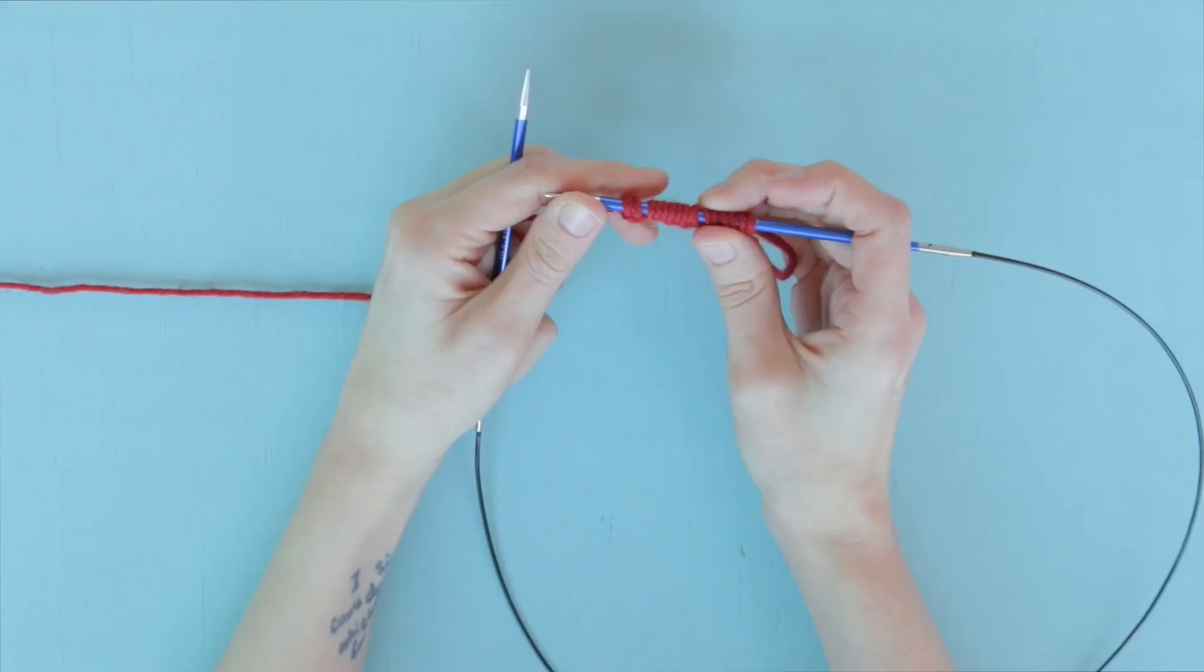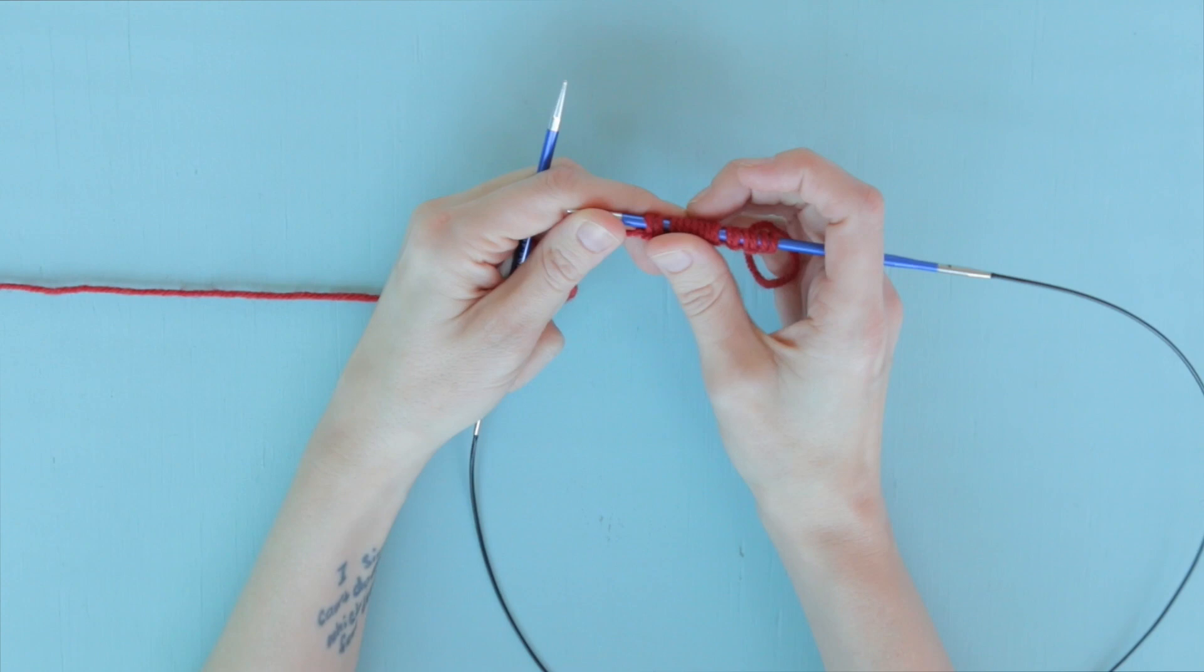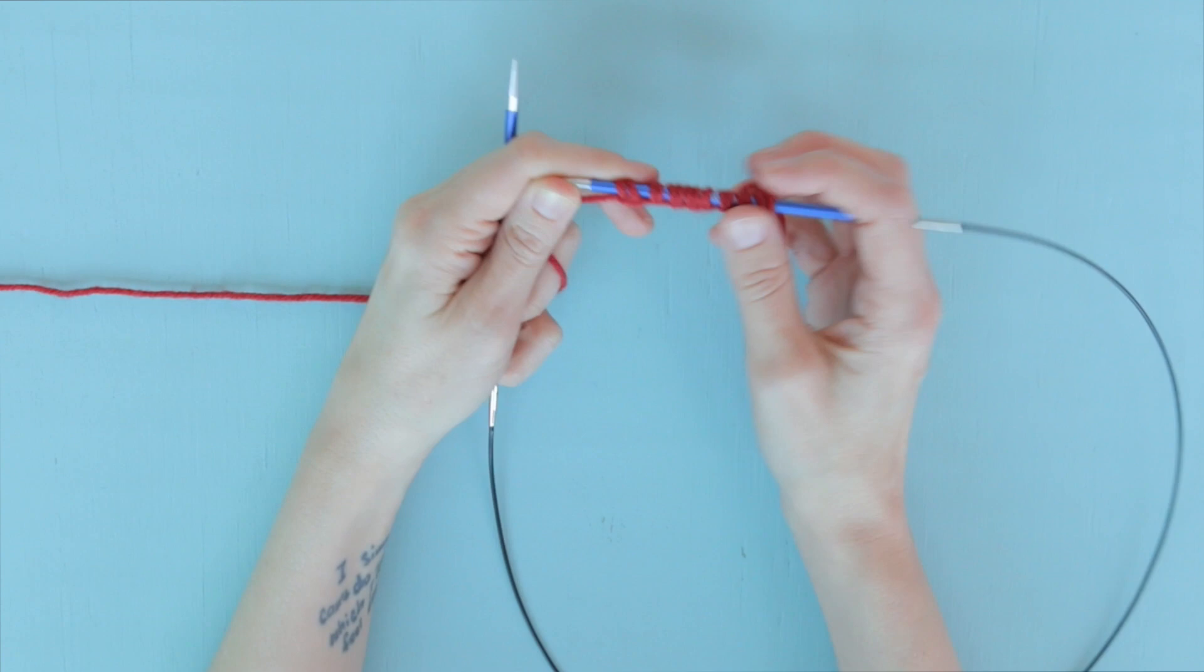All right, that is row one, a wrong side row done. So we started out with eight stitches for demonstration's sake on our needle. And now we have 16 because of those two wraps per purl stitch on the wrong side.